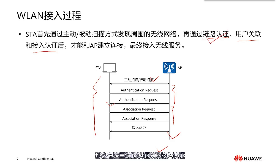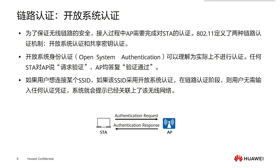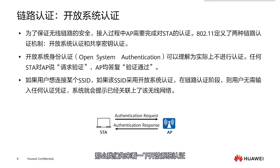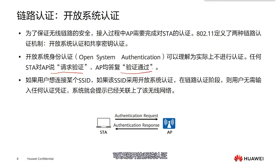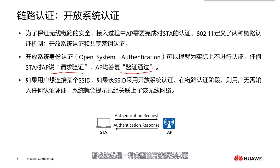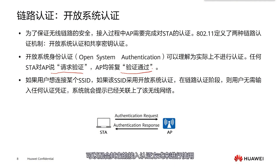Here we will talk about link authentication and access authentication in detail. There are two types of link authentication: open system authentication and shared key authentication. Open system authentication is completely open — as long as you attempt to authenticate, you will pass. If a certain SSID has no password and you can connect directly, that is a typical example of open system authentication. This type of authentication is usually not used alone because it lowers security, but it can be combined with other access authentication types.